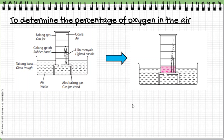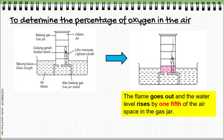After a few minutes, the flame goes out and the water level rises. Originally there was no water inside the gas jar. When the flame of the candle goes out, the water level rises by one fifth of the air space in the gas jar. This means that oxygen has been used up by the burning candle.